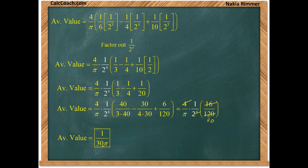We'll sub back in for u. We'll end up with four over pi times a sixth of sine x to the sixth minus a fourth of sine x to the eighth plus a tenth of sine x to the tenth. And we have to evaluate this at pi over four and at zero.